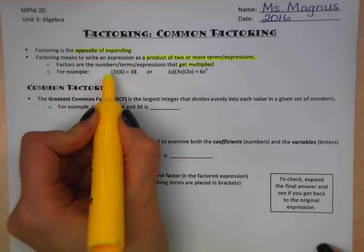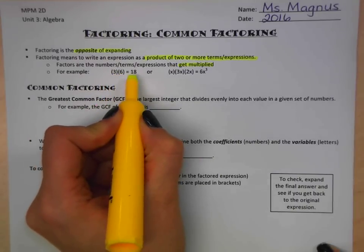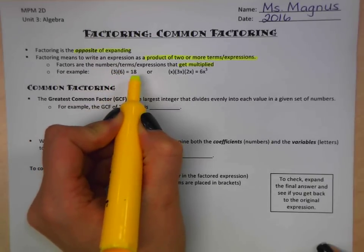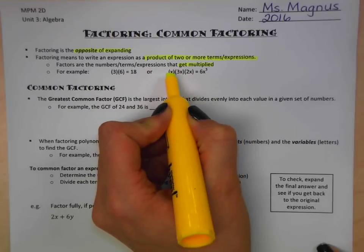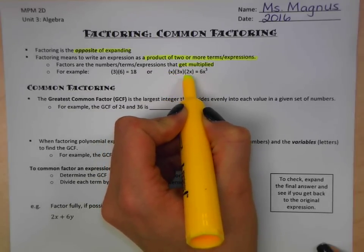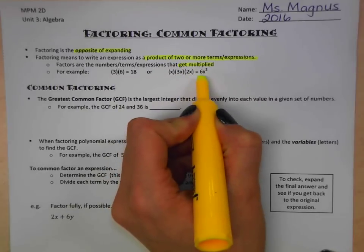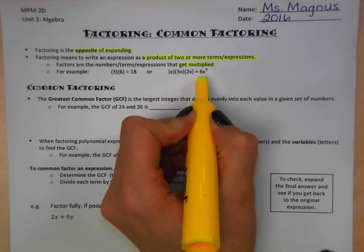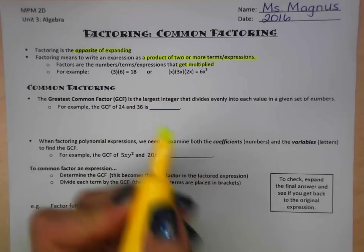For example, 3 times 6 is 18. So the factors of 18 are 3 and 6, because they multiply to give the product 18. Just like over here, x, 3x, and 2x are all factors of 6x cubed because they multiply together to give us 6x cubed. So that's factoring in general.